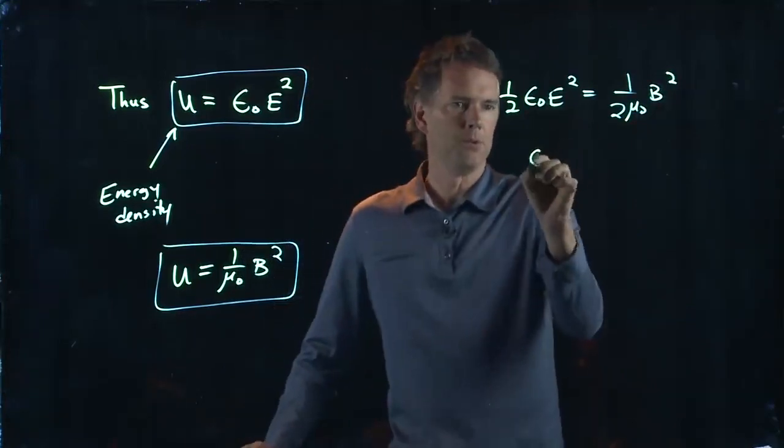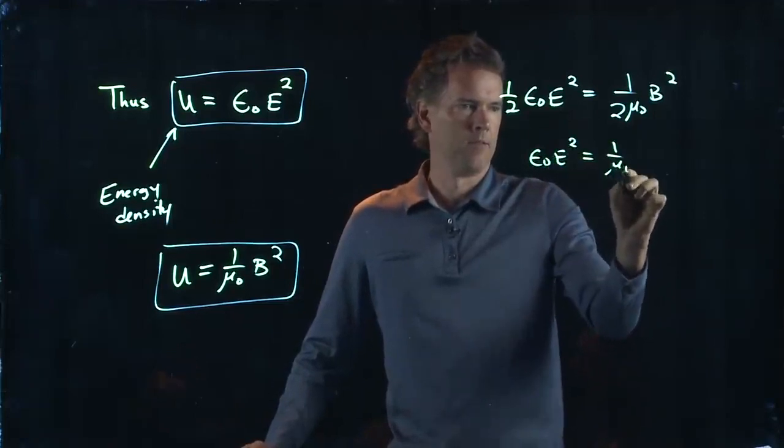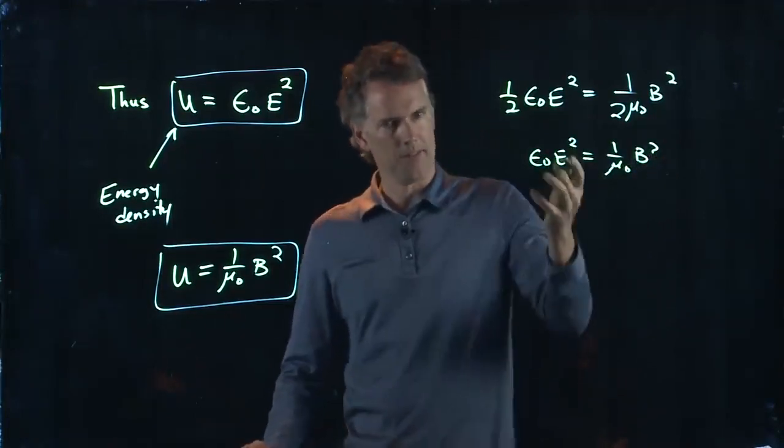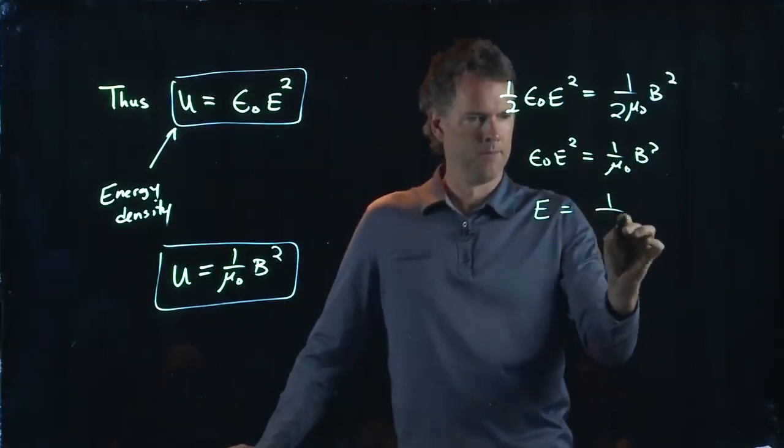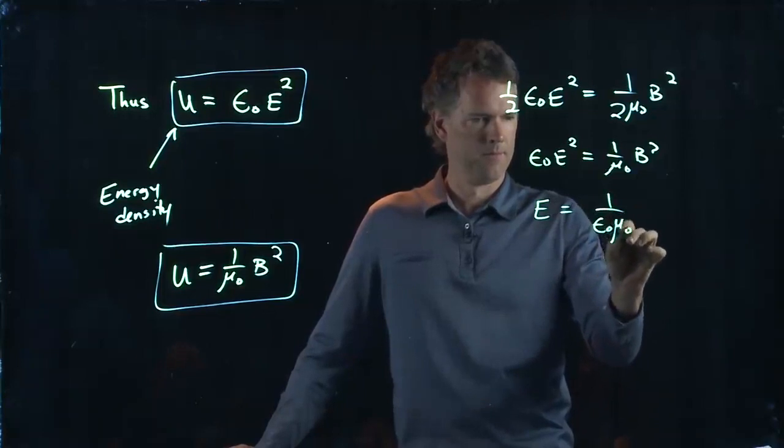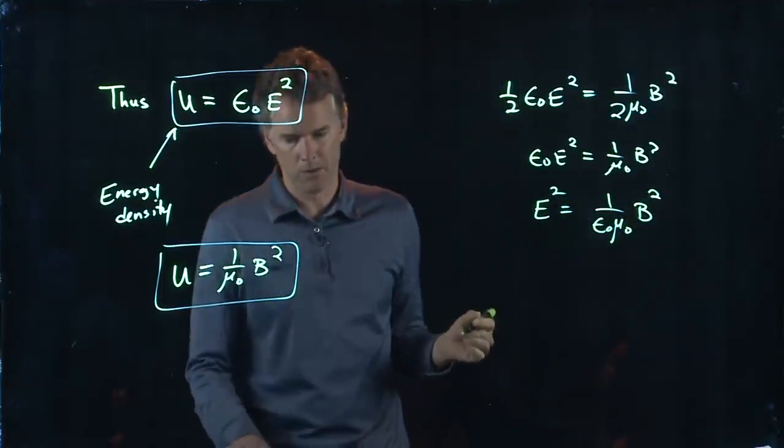Let's multiply by two on each side, get rid of the half. And now let's divide by epsilon knot. And now let's take a square root of both sides.